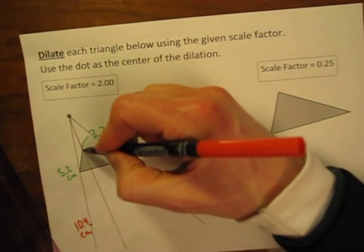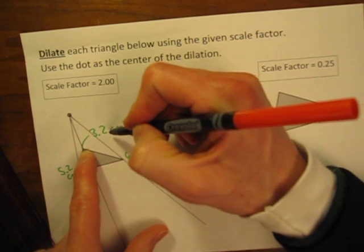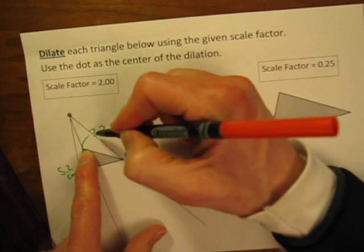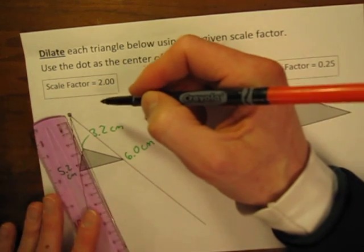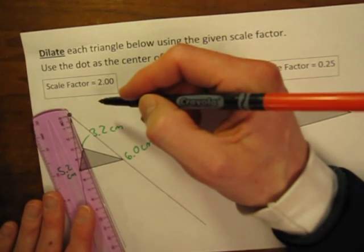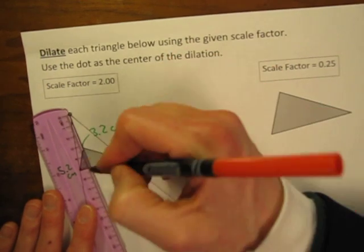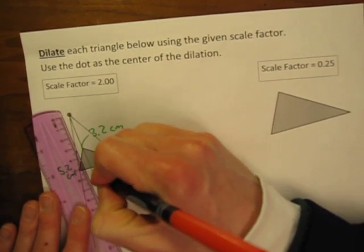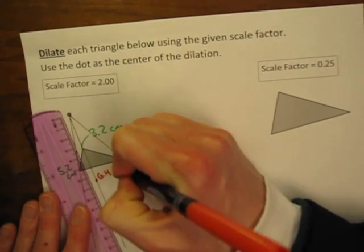Take this point. This point was 3.2 cm away from the center. Now we're going to multiply that by 2. 3.2 times 2 is 6.4. So let's go there 6, 6.4 is right there. 6.4 cm.